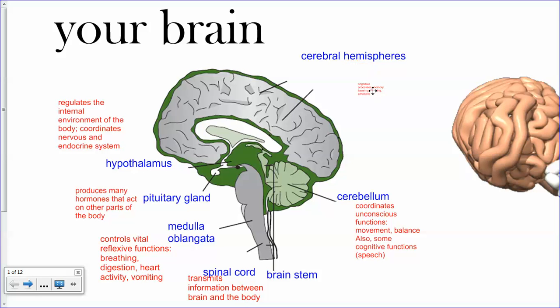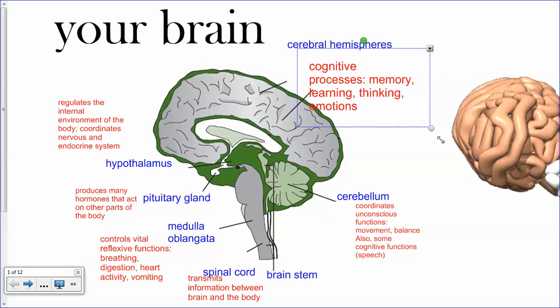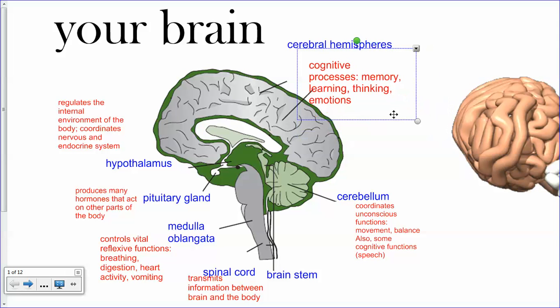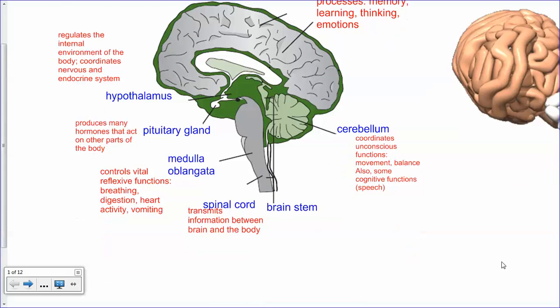Finally, the cerebral hemispheres — that's where all your creative thought, memory, thinking, learning, and emotions come from. So that is your brain.